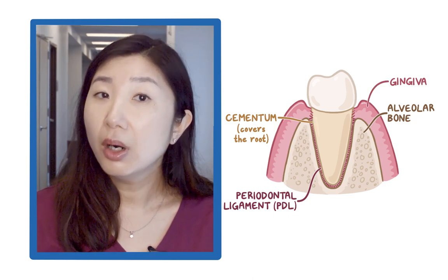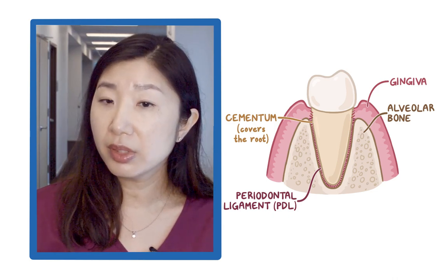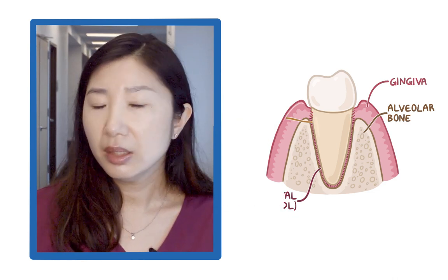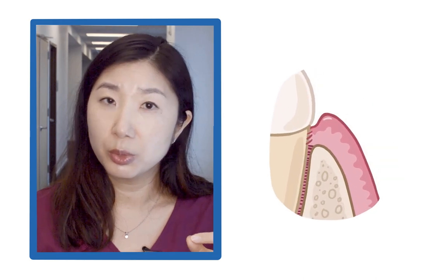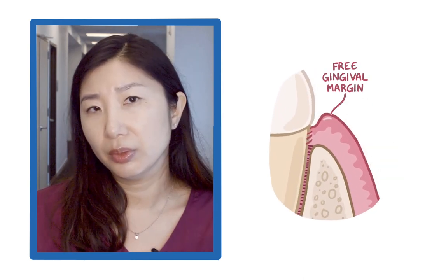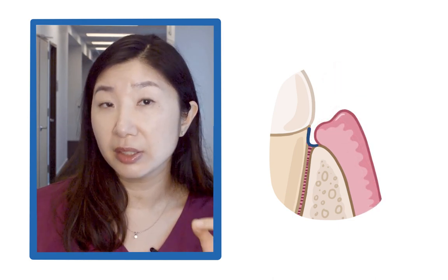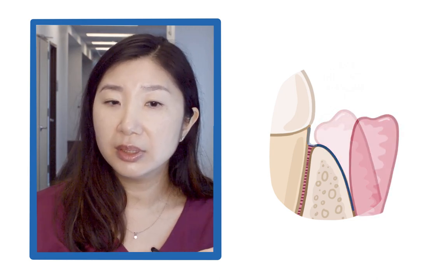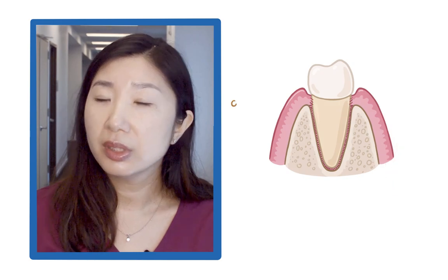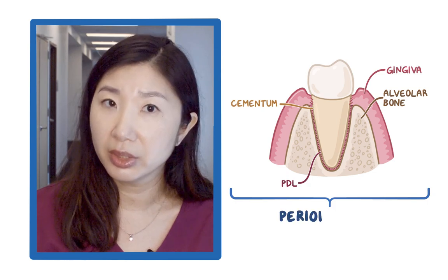The gingiva forms a collar around each tooth. It is attached in part to cementum of the tooth and apically in part to the alveolar process. Imagine if you picked up the gingival margin or free gingival margin with your fingers and started to peel it off from the tooth — part of the soft tissue would first detach from the tooth, root, or cementum, and then apically down off from the alveolar bone. All these four structures — cementum, alveolar bone, PDL, and gingiva — are also collectively called periodontium.